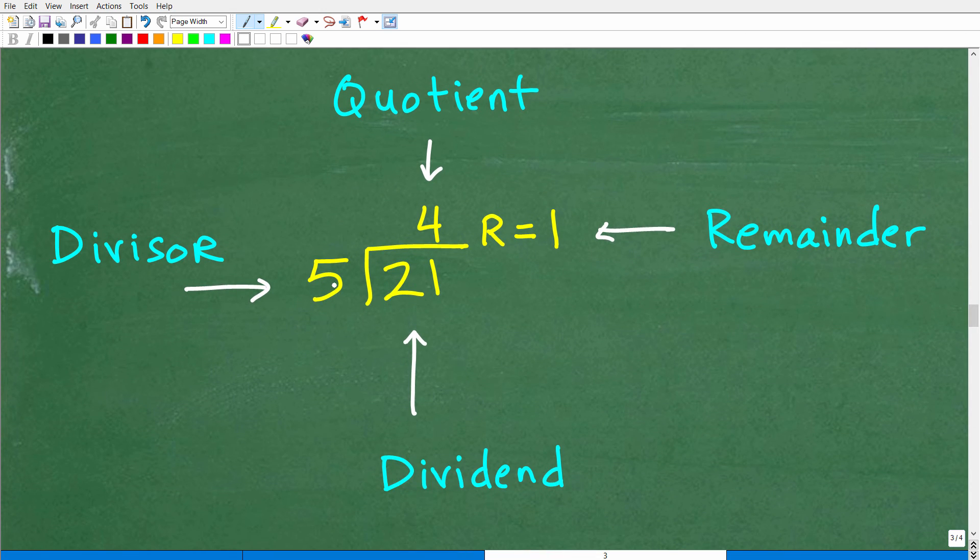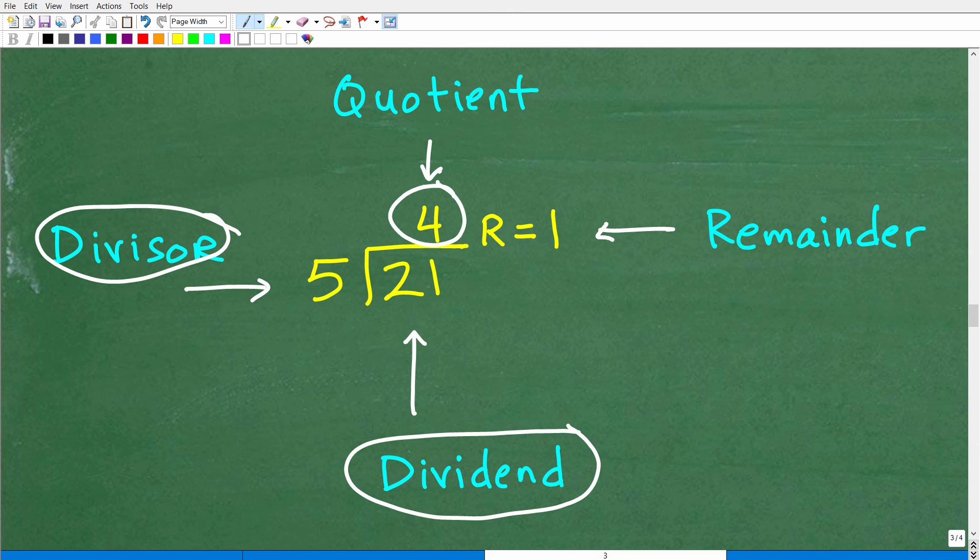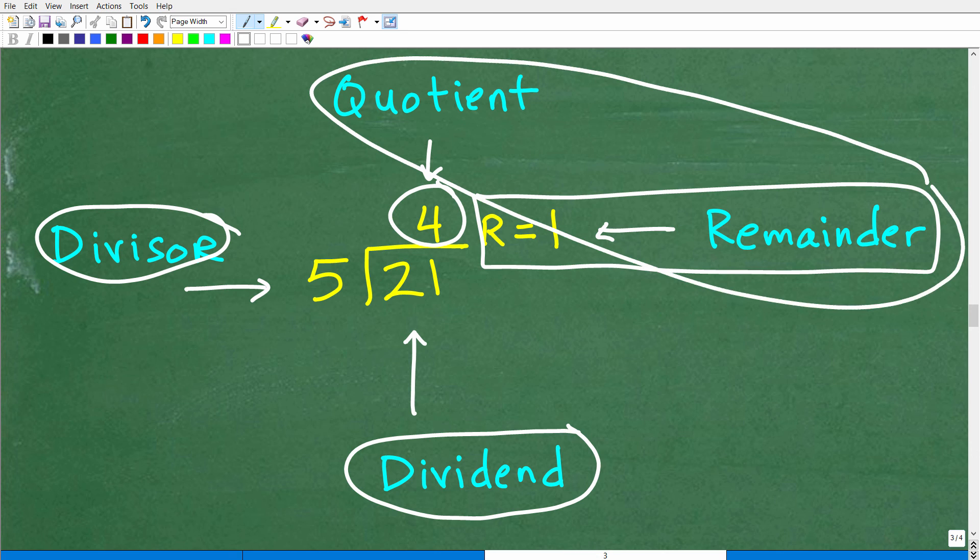Let's go ahead and answer the final question here. So 21 divided by 5, well, the 21 is the dividend. It's being divided by 5. That's the divisor. Our answer is the quotient, but that's 4. But more technically, we also have to include the remainder as part of our final answer. So it's 4, remainder 1. So sometimes the answer to a division problem will just be the quotient or the quotient and the remainder.